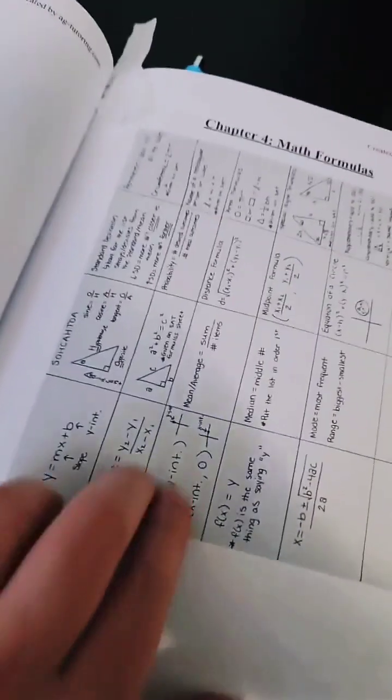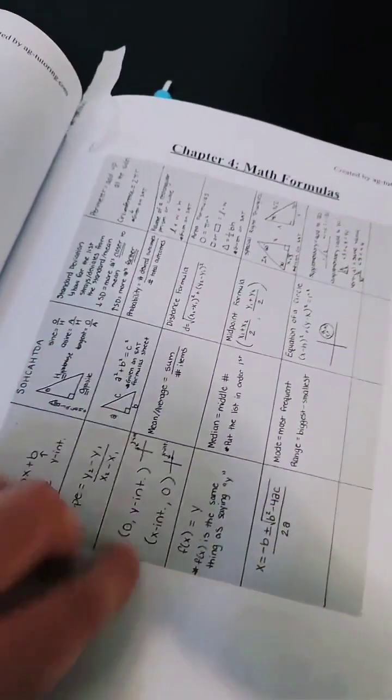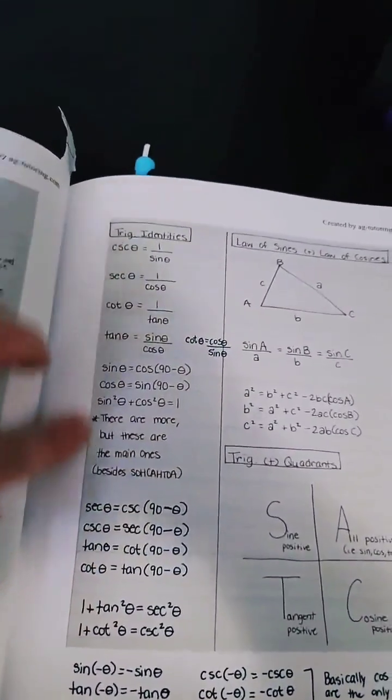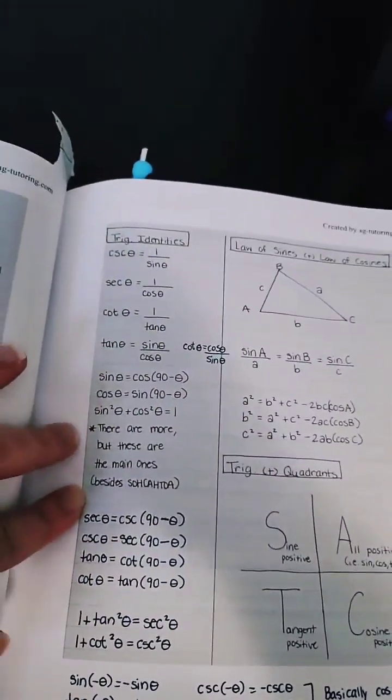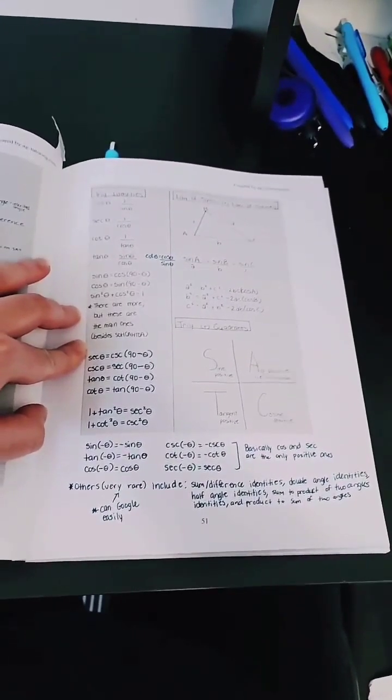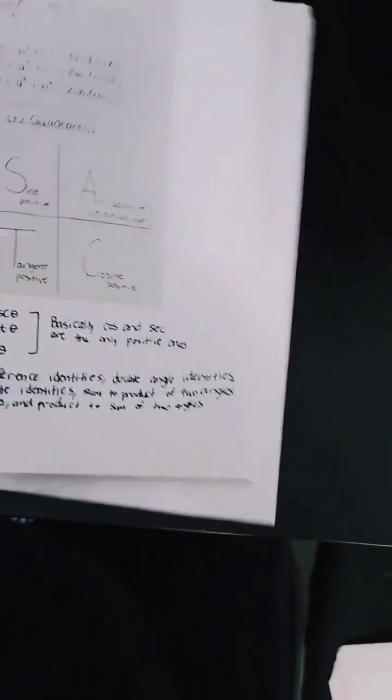In this book, Chapter 4 covers the math formulas — some initial stuff like the SOHCAHTOA formulas. A couple pages later it has some trig identities. These are going to be the main trig identities tested on the exam. If you want to pause this video, here are some extra ones as well that you might want to consider. Let's now go to the questions.